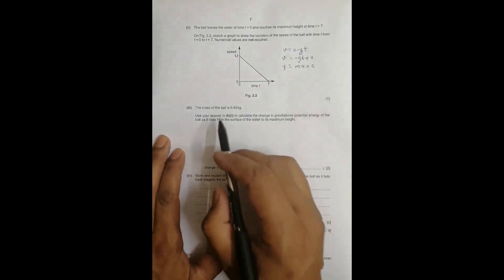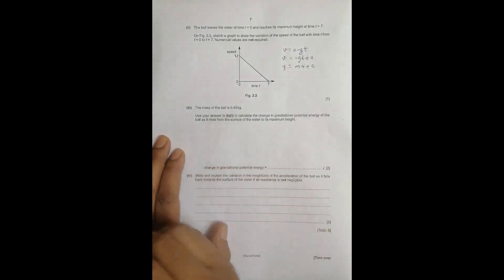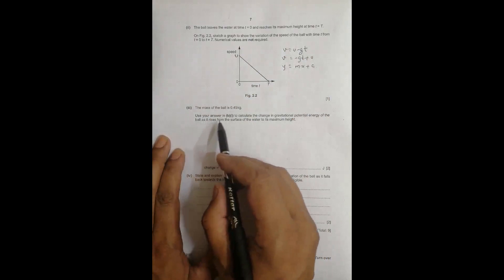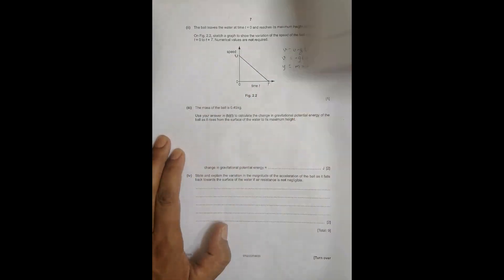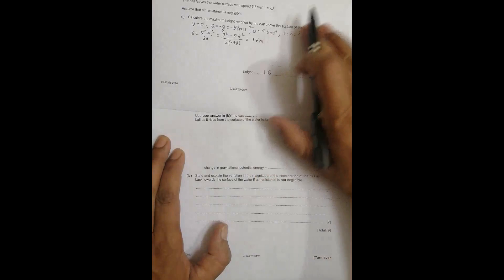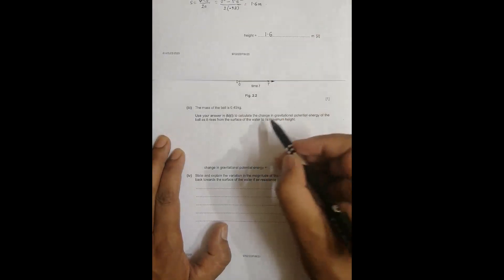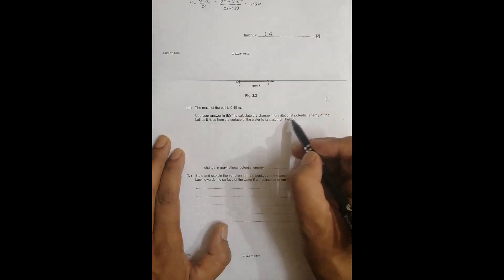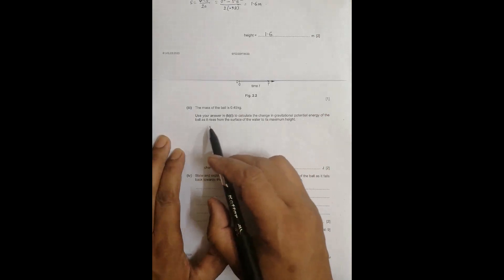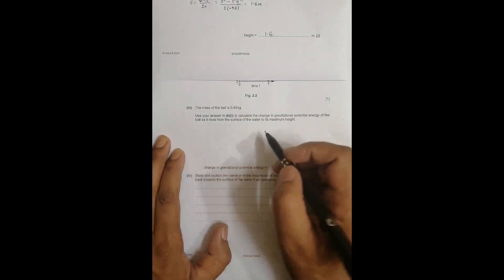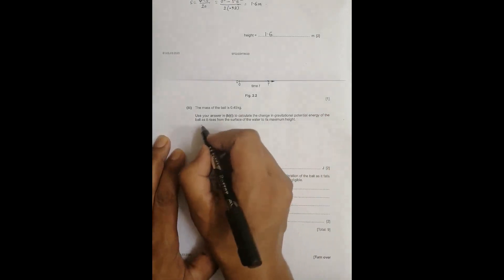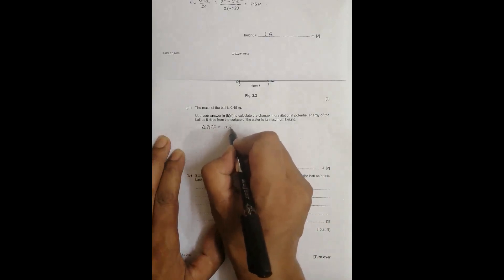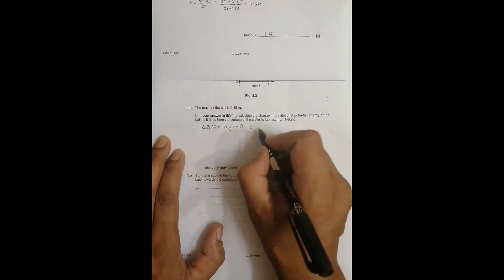Part three: the mass of the ball is 0.45 kg. Use your answer from B1, the 1.6 meter value, to calculate the change in gravitational potential energy as the ball rises from the water surface to maximum height. The change in GPE is delta GPE equals mgh minus 0, final minus initial.